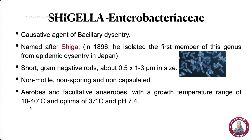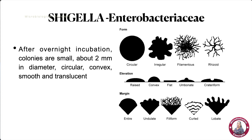The growth temperature range is 10 to 40 degrees Celsius, with an optimal growth temperature of 37 degrees Celsius and a pH of 7.4. When cultured in media after overnight incubation, it produces small colonies of 2 mm diameter. The colonies are circular, convex, smooth, and translucent — meaning they permit the passage of light.